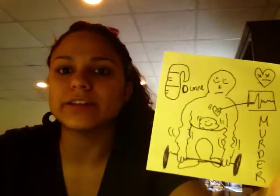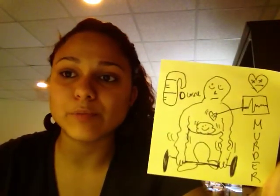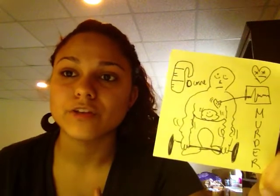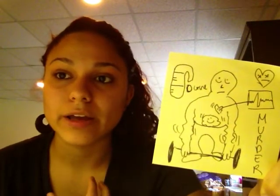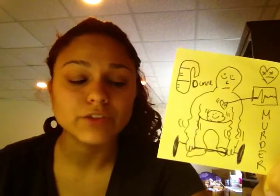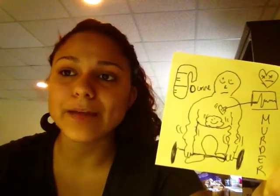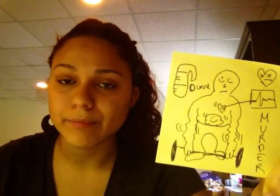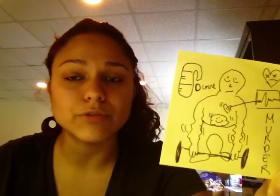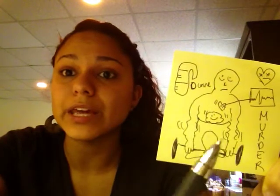Now, what does someone that has hyperkalemia look like, or what are the problems they could present? I'm going to think of murder. We know that when a prisoner is supposed to be killed, they give them potassium. So potassium is very strong and it has a lot of side effects such as cardiac arrest. M is going to be for muscle cramps. Hypokalemia is muscle weakness, but hyperkalemia is going to be muscle cramps.